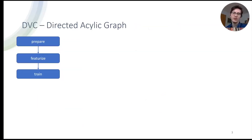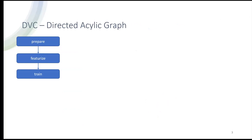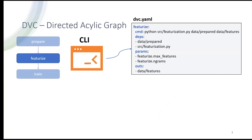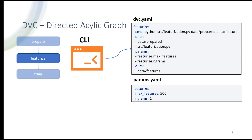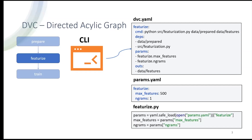Now I want to take an example from the DVC documentation to show how I got the idea of developing the Zynctrack package. I don't want to use my own examples because this could be very lengthy. So here we take the preparing, featurization, and training of a model. If we take a look at the featurization step in the documentation, we use the command line interface. But you could also write those DVC YAML files manually yourself. In addition to that, we have the parameters file — either YAML, JSON, or Python file — and a Python script which we can use to featurize our dataset.